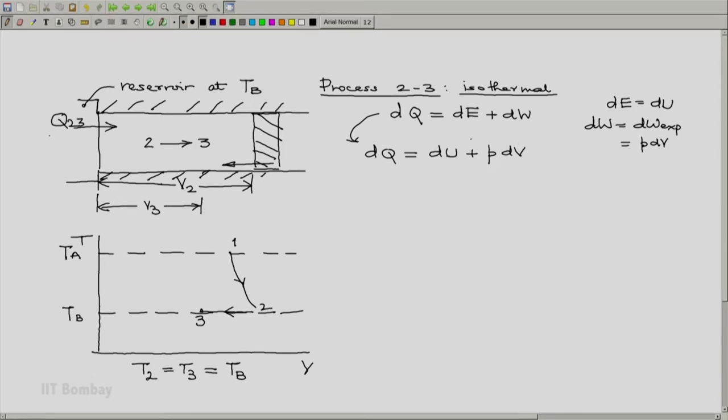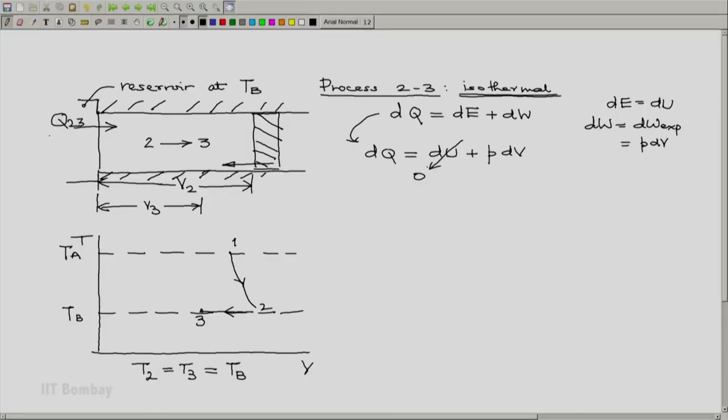Now we notice that our process is isothermal, so dT is 0. And then we use Joule's law which says that the thermal energy of a gas U depends only on temperature. Since temperature does not change, dU is 0. Hence our dQ becomes P dV.